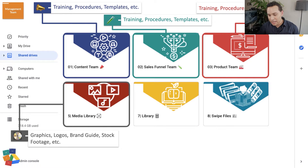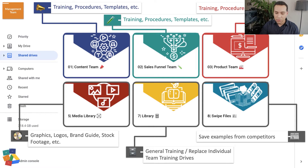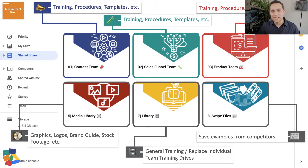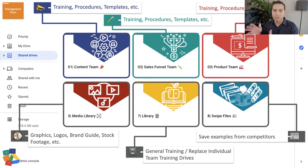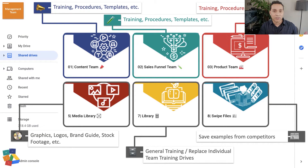The other three team drives I recommend are a media library, a plain library, and swipe files. The media library is where we store all of our graphics, brand guide, and logo. No matter what project someone is working on, they can go to this folder and find stock footage, logos, or brand information. It also prevents someone from redoing work — if someone makes a great graphic for a blog post, we save it centrally so someone building a sales funnel or email can reuse it. This lets you enjoy economies of scale with your media over time.